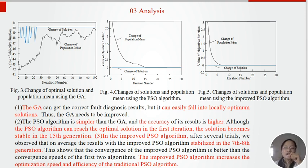This is the comparison. The GA can get the correct fault diagnosis result, but it can easily fall into locally optimum solutions. Thus the GA needs to be improved. The PSO algorithm is simpler than GA and the accuracy of the result is higher. Although the PSO algorithm can reach the optimal solution in the first iteration, the solution becomes stable in 15 generations. In the improved PSO algorithm, after several trials, we observed that on average, the results with the improved PSO algorithm stabilize in the 7th to 8th generation. This shows that the convergence of the improved PSO algorithm is better than the convergence speed of the first two algorithms. The improved PSO algorithm increases the optimization speed and the efficiency of the traditional PSO algorithm.